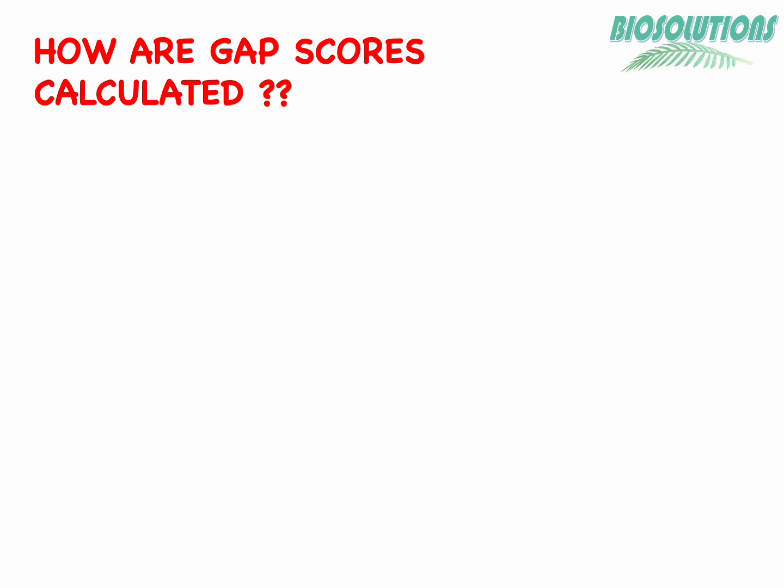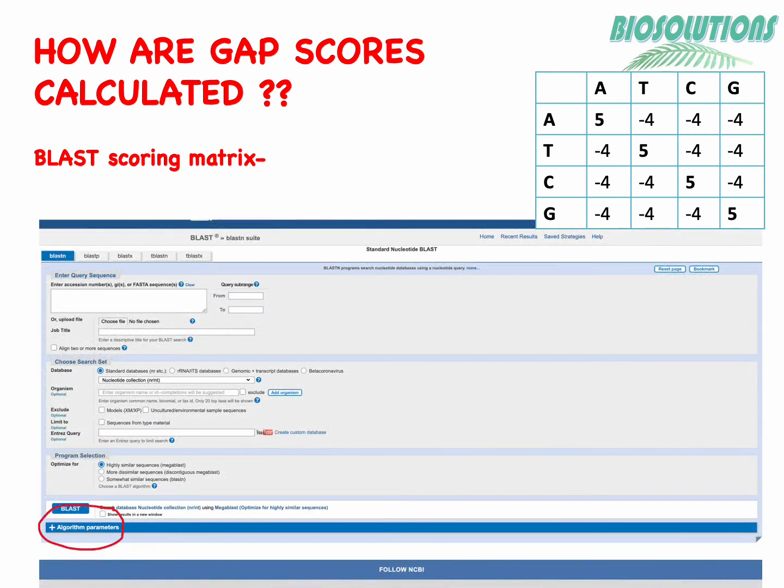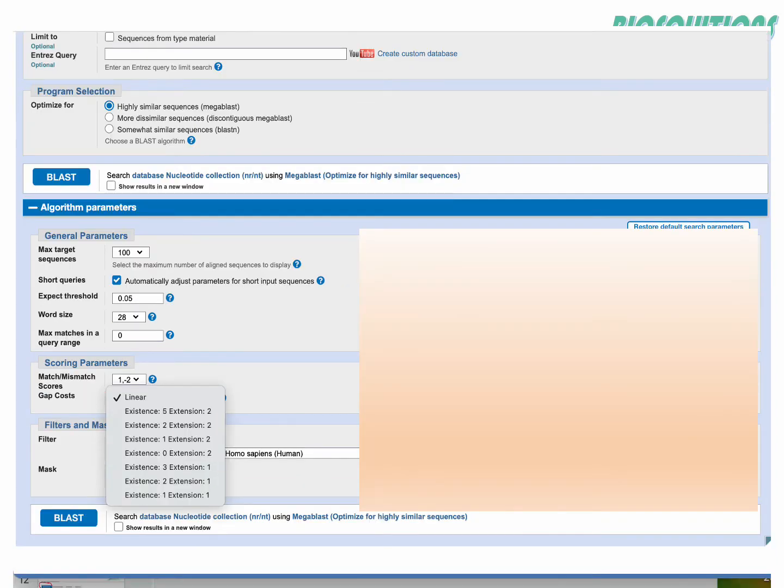Now the important point is how these gaps add to the max score calculation by BLAST. We do have a BLAST scoring matrix as well, as BLAST uses different values to calculate the comparison scores which you can see here. These values can be seen under additional algorithm parameters on BLAST page and can be chosen if we have a certain requirement, else we just leave them to default settings. Also in the same section we see gap penalty values.